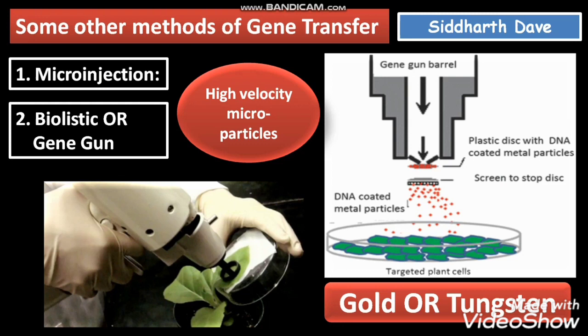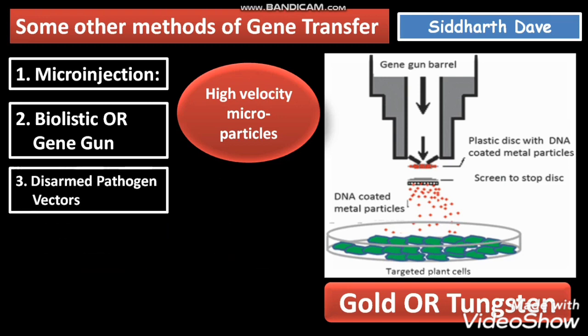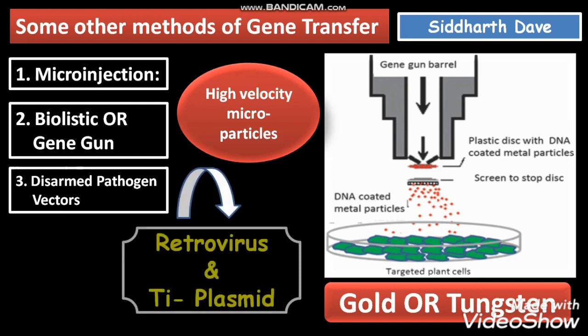Micro injection is generally used for animal cells, while the biolistic or gene gun method is generally used in the case of plants. The third method is the disarmed pathogen vector method, in which retrovirus and Ti plasmid are used. The infection efficiency of the retrovirus and Ti plasmid is disarmed — their pathogenic capability is destroyed — and then they are allowed to infect the bacterial cell.